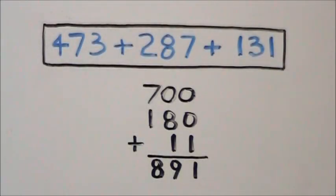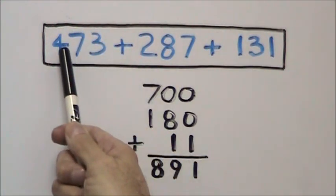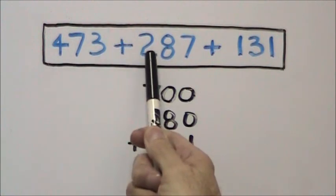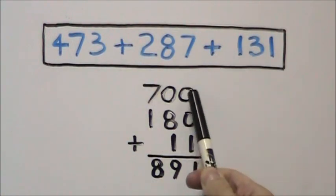Some of you may be able to perform this problem even quicker using mental math. Start with your hundreds column. Take 400 plus 200 plus 100. That gives you 700.